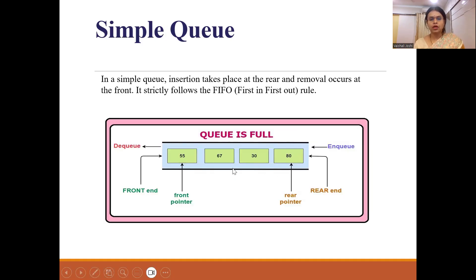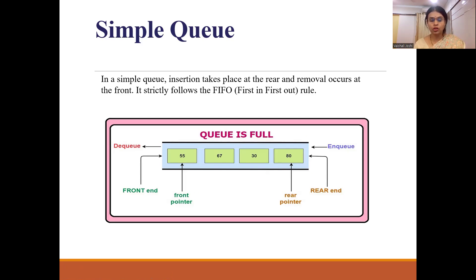Now in the circular queue — suppose you have removed one element. At that time the front is incremented by one. This is just the opposite operation compared to the stack. In the stack, whenever you remove an element the top is decremented, but here whenever you remove an element the front is incremented, because we are using two pointers — removing elements from the front end and inserting elements from the rear end.